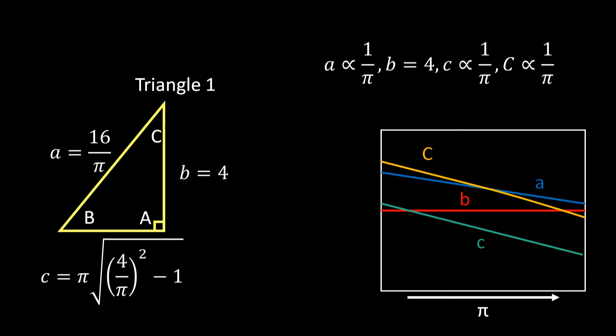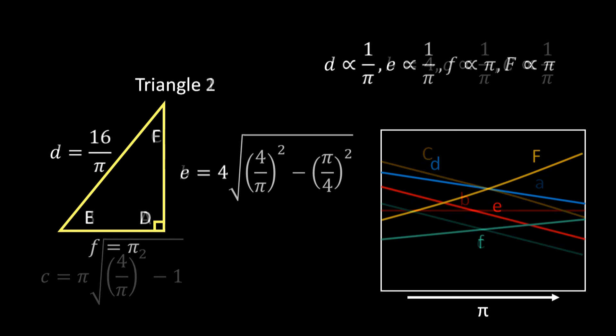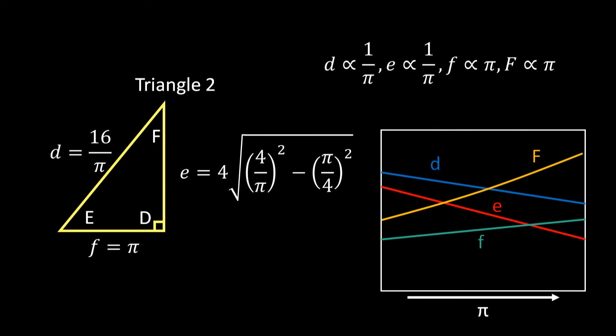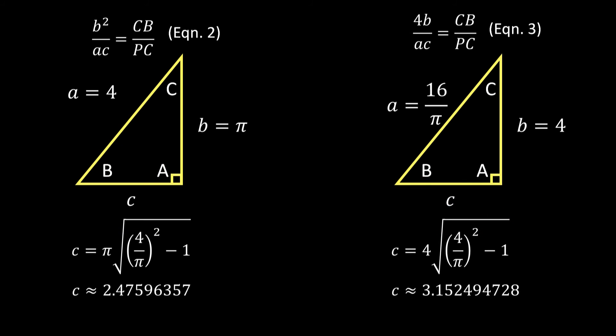Likewise for Triangle 2, as π increases the hypotenuse and the long side both decrease in length while the short side and the smaller acute angle both increase. The angles change because the lengths of the sides change when you change the value of π. Bottom line: Equations 2 and 3 are linked to the hypotenuse of the triangle and have nothing to do with any congruent angles.